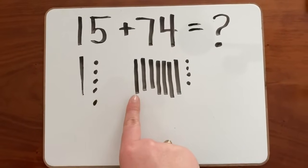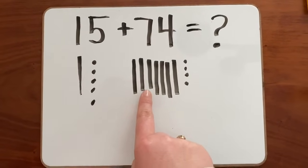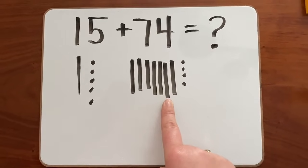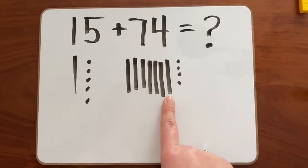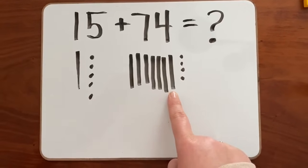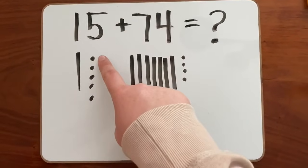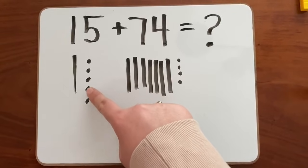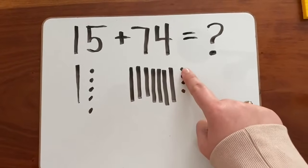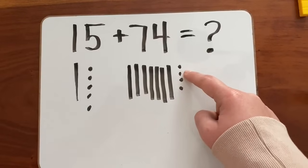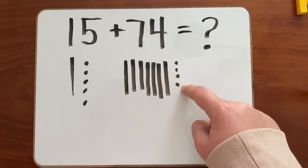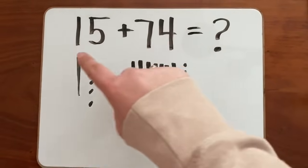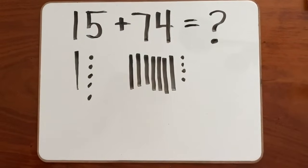10, 20, 30, 40, 50, 60, 70, 80. We have no more tens, so now we count up by ones: 81, 82, 83, 84, 85, 86, 87, 88, 89. So our drawings all together represent the number 89. We found that 15 plus 74 equals 89.